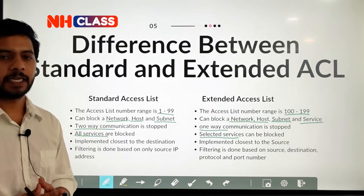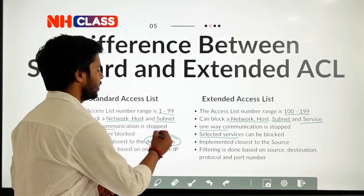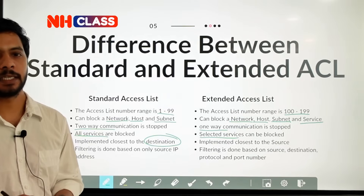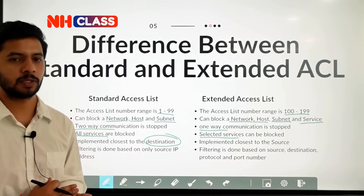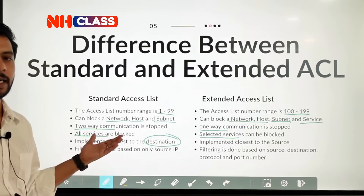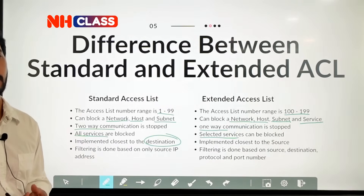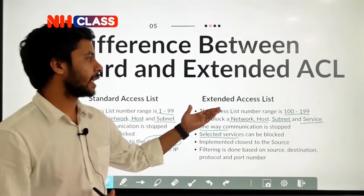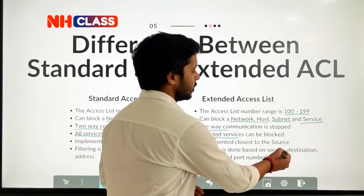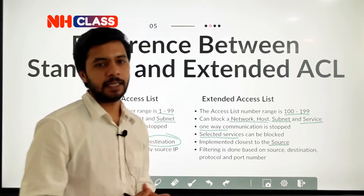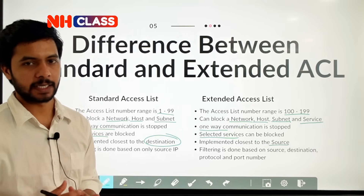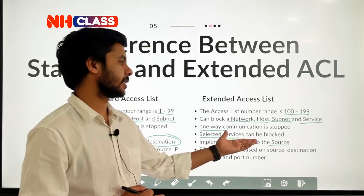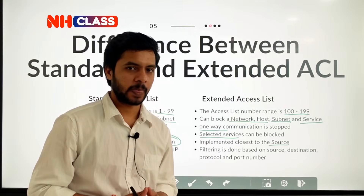Your standard access list should be implemented closest to the destination. If you implement it closest to the source, it will block the entire communication for that particular network, host, or subnet. Your extended access list should be implemented closest to the source. Why it is implemented close to the destination and why extended is implemented closest to the source will be clearly shown in the next practical video.